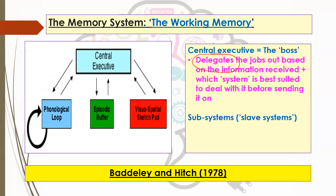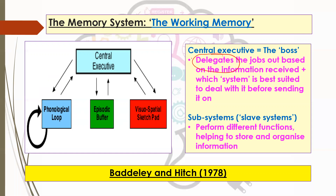You don't need to know a huge amount about the central executive other than that it's the overall leader — it dictates where the information goes once it's initially been received. It doesn't do anything with the information itself; it's not the worker in this process. It delegates the jobs to these other systems underneath it. These different subsystems are sometimes called slave systems, because they are doing the work for the central executive.